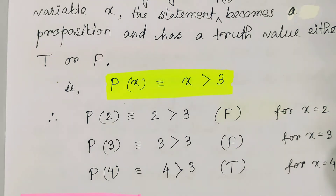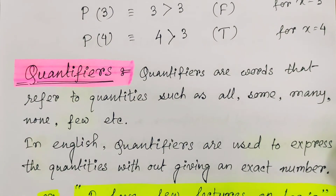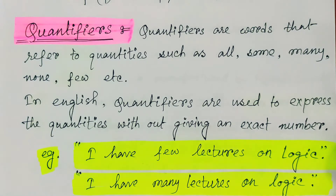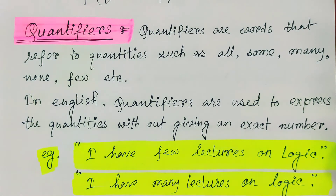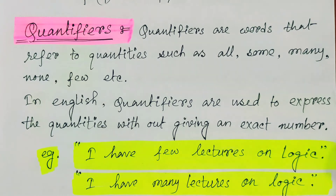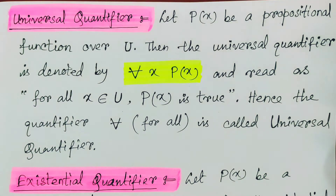Now it is time for the quantifier. What is a quantifier? Quantifiers are words that refer to quantities such as all, some, many, none, few, etc. In English, quantifiers are used to express quantities without giving an exact number. For example, 'I have few lectures on logic' — here 'few' is the quantifier word, representing that I have some lectures on logic. Similarly, 'I have many lectures on logic' gives the insight that I have a large number of lectures. These quantifiers are of two types: universal quantifier and existential quantifier.